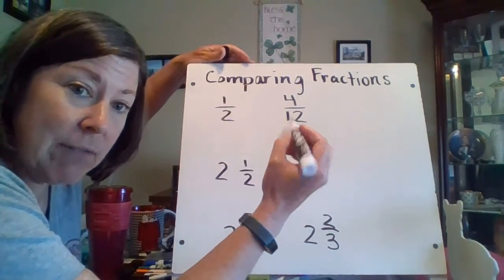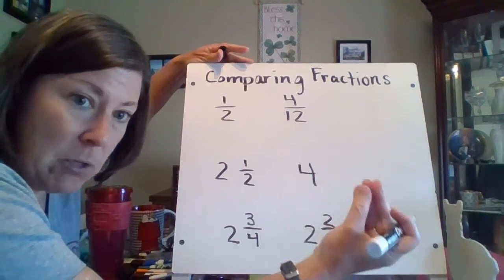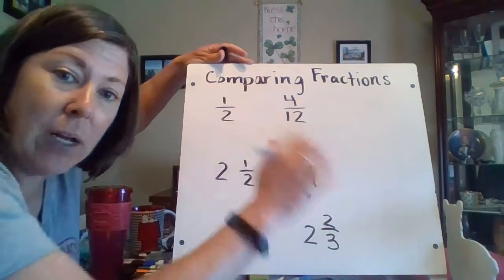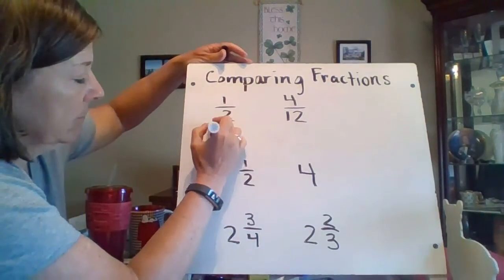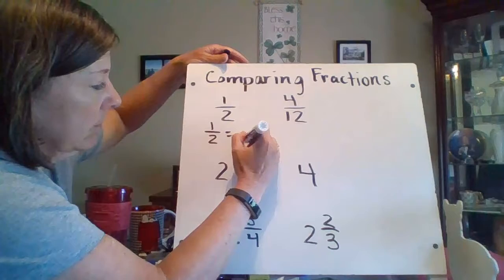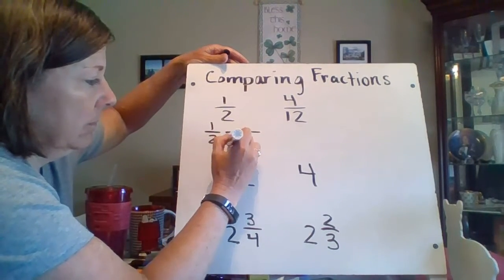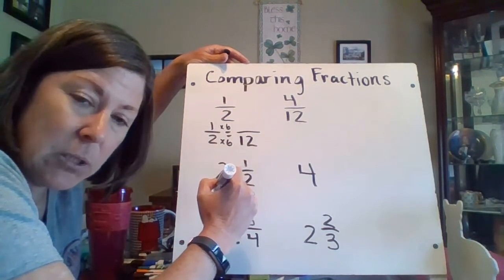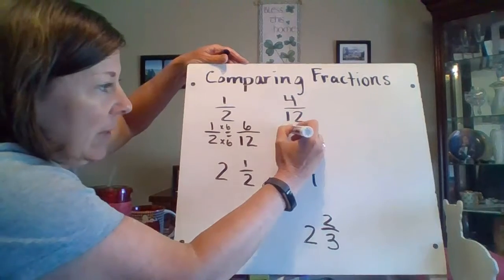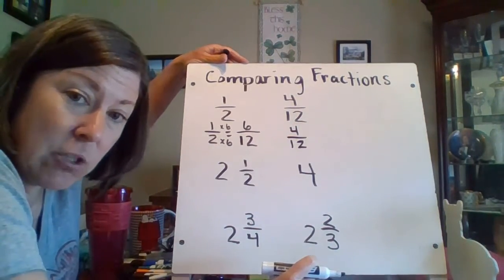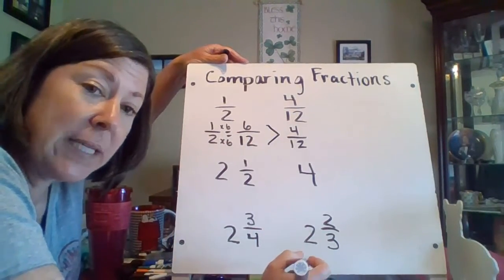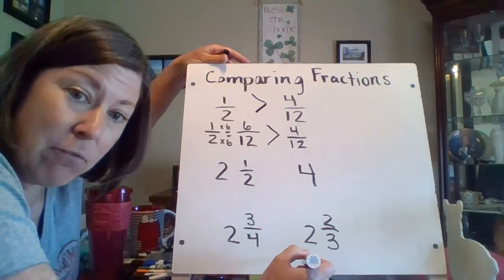Now, remember, if you can't think of one off the top of your head, then you need to list the multiples. When I list the multiples of 2, I get to 12, so a common denominator is 12. I'm going to rewrite 1 half with a denominator of 12, which means I have to multiply by 6 over 6. 1 half is equal to 6 twelfths. 6 twelfths is greater than 4 twelfths, which means that 1 half is greater than 4 twelfths.